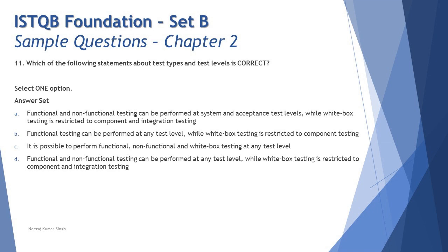Option B says: functional testing can be performed at any test level while white box is restricted to component testing. It is just best practice that component testing makes use of white box as an approach, but it is not written anywhere that unit or component testing is a type of white box testing, or vice versa. Many people have this myth, but even performance testing and security testing can be done at the code level — any test level can make use of these approaches. So option B is also not correct.